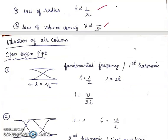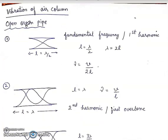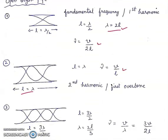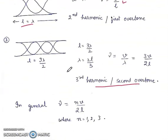Next is vibration of air column — first in an open organ pipe, which is open from both ends. First harmonic: L = λ/2, λ = 2L, ν = V/2L. Second harmonic (first overtone): L = λ, ν = V/L. Third harmonic (second overtone): L = 3λ/2, λ = 2L/3, ν = 3V/2L. In general, ν = nV/2L, where n = 1, 2, 3.